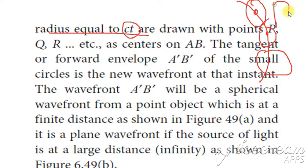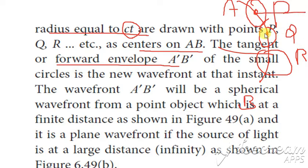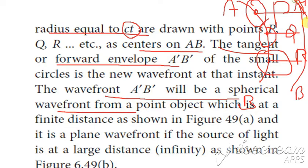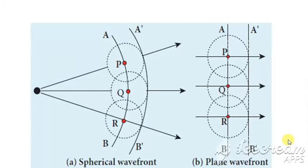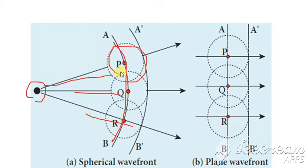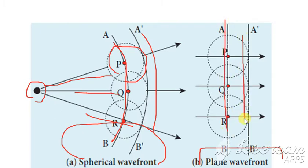At each point, we consider circles with radius equal to c times t. Let us consider points P, Q, and R as the centers on AB. The forward envelope, named A' and B', represents the new wavefront. This A'B' is a spherical wavefront. From a point source we get this wavefront, and from these circles we get the spherical wavefront. A plane wavefront is represented as a straight line.